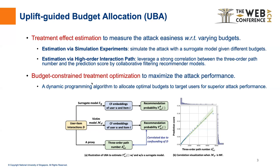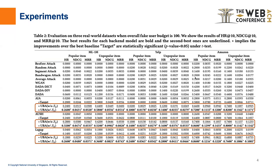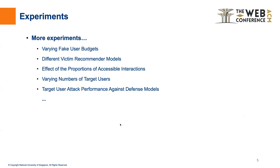Given the estimated treatment effect, we use dynamic programming methods to calculate the optimal budget allocation to maximize the attack performance. Experiments on three back-end models have validated the effectiveness of this proposed UBA framework. More experiments under diverse settings can be found in our paper.